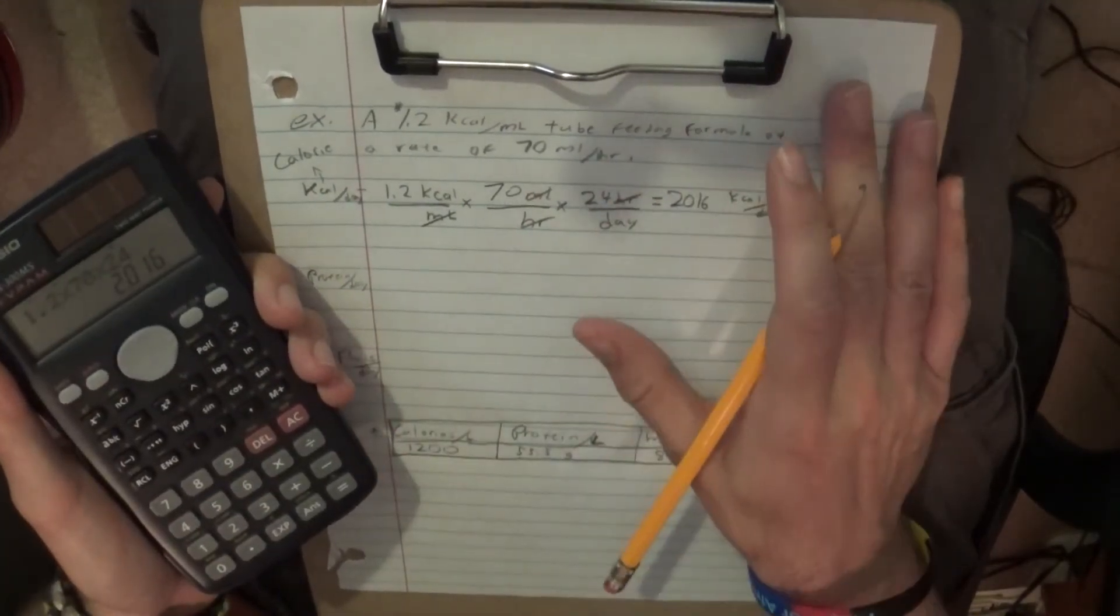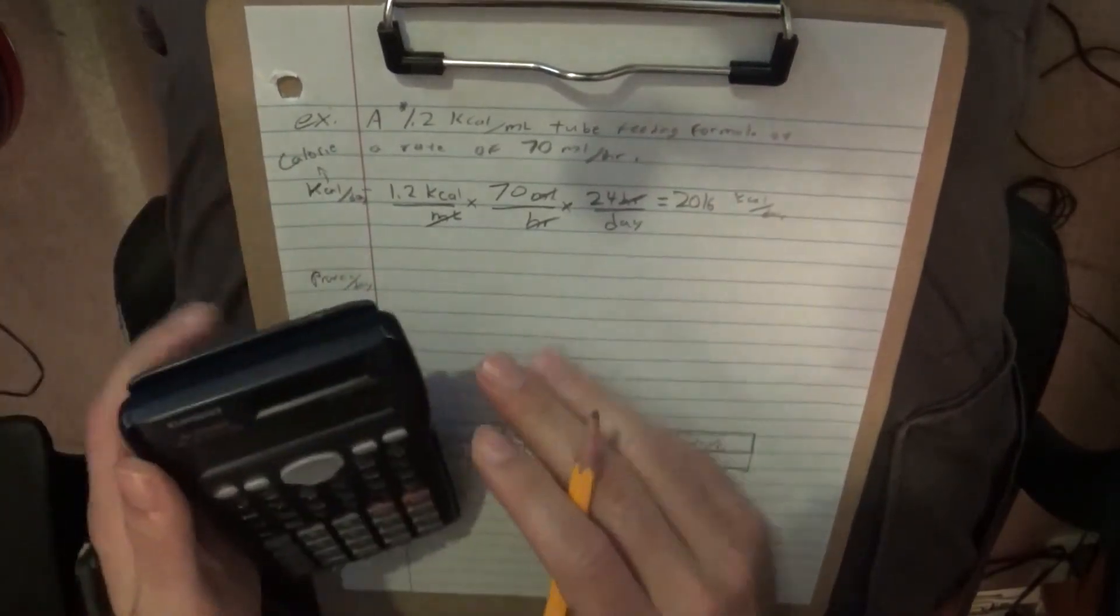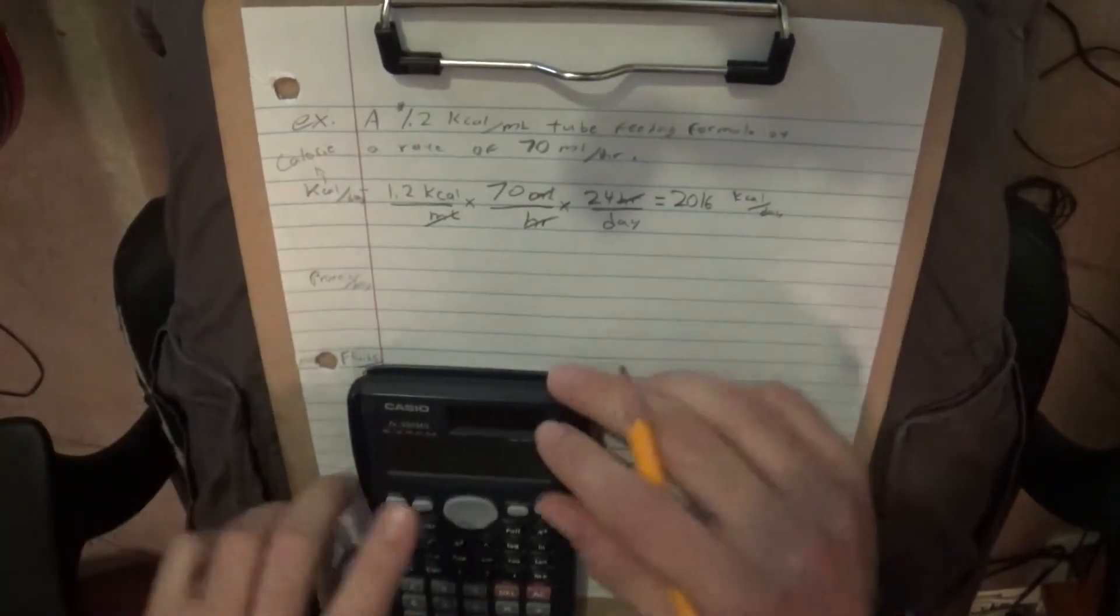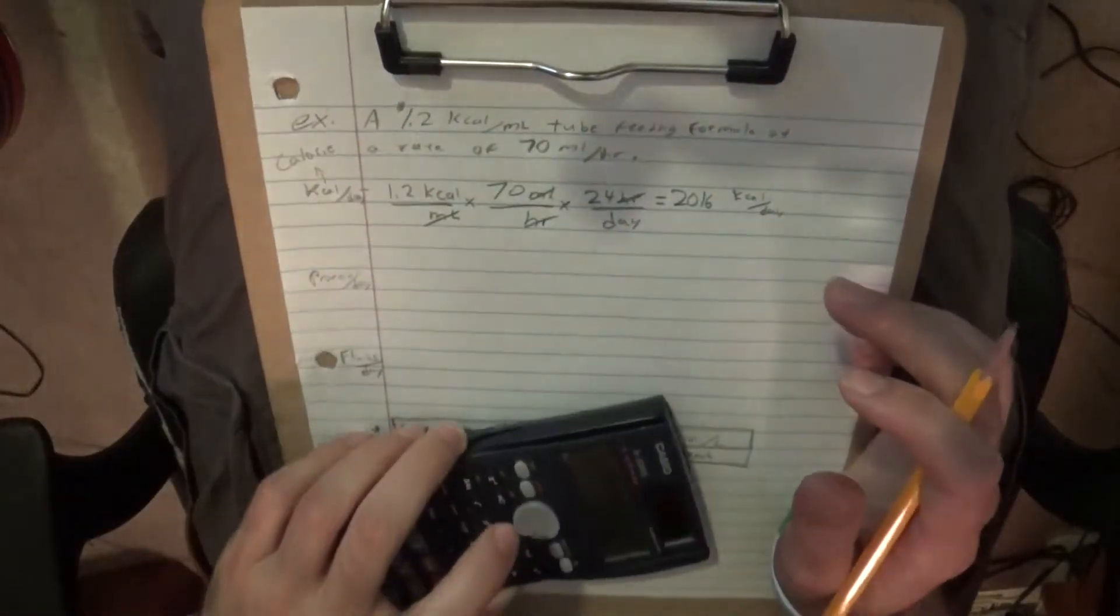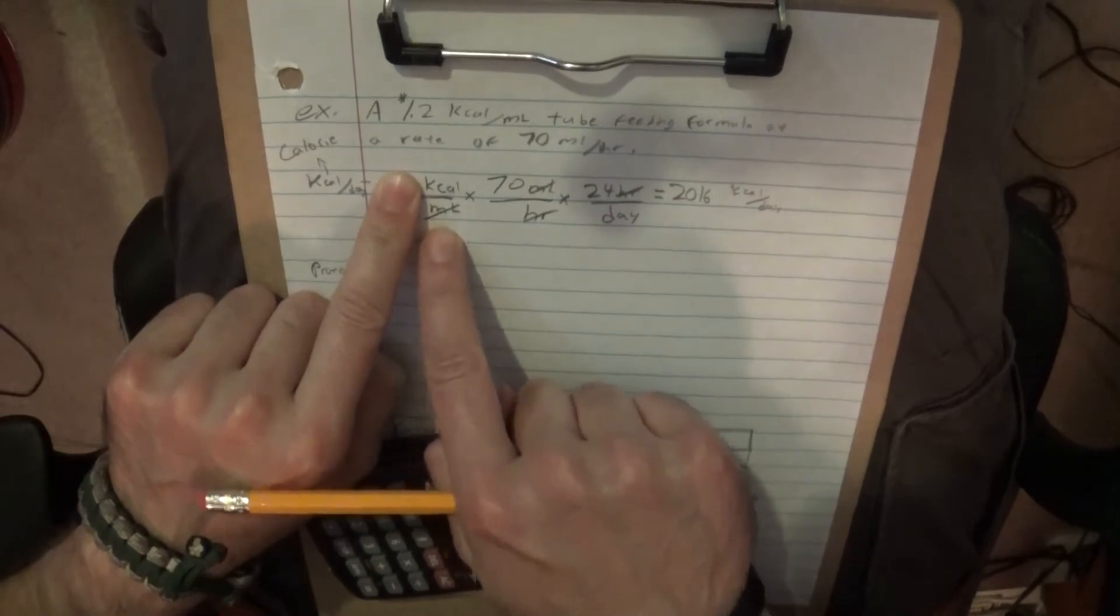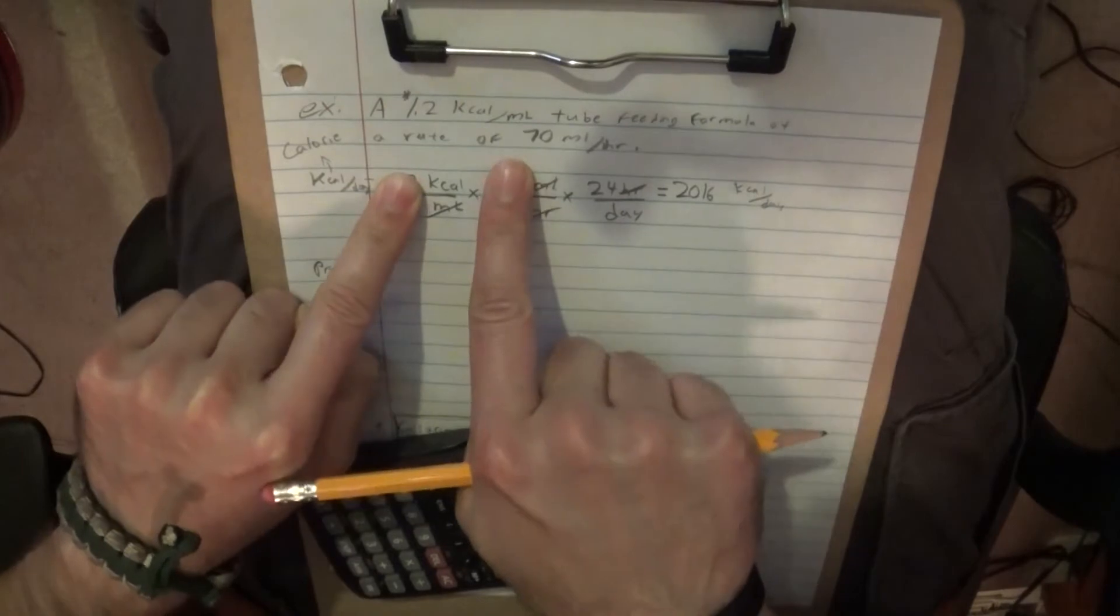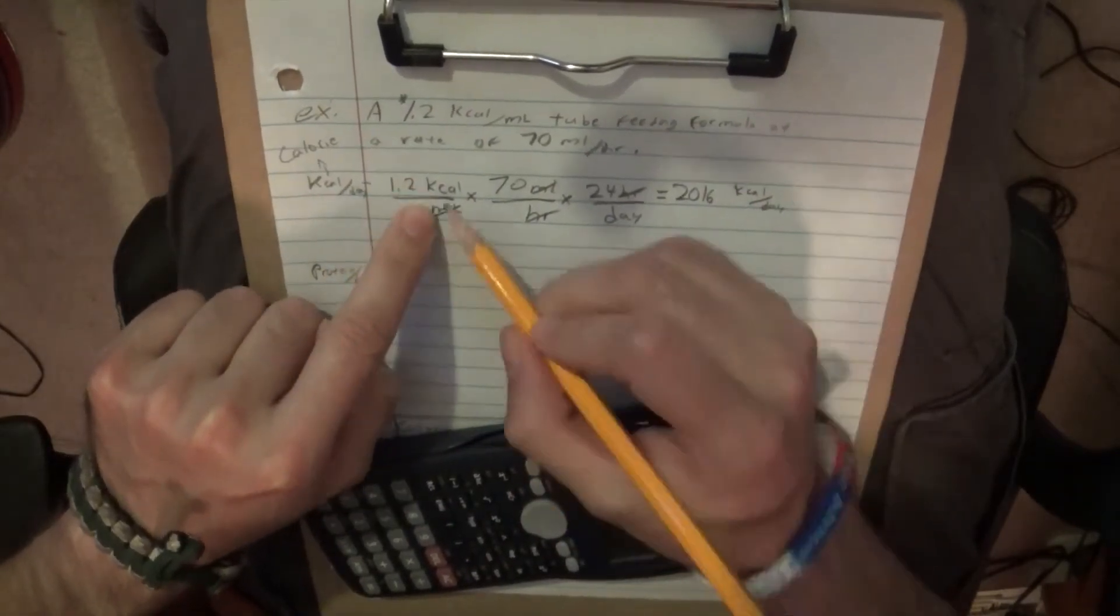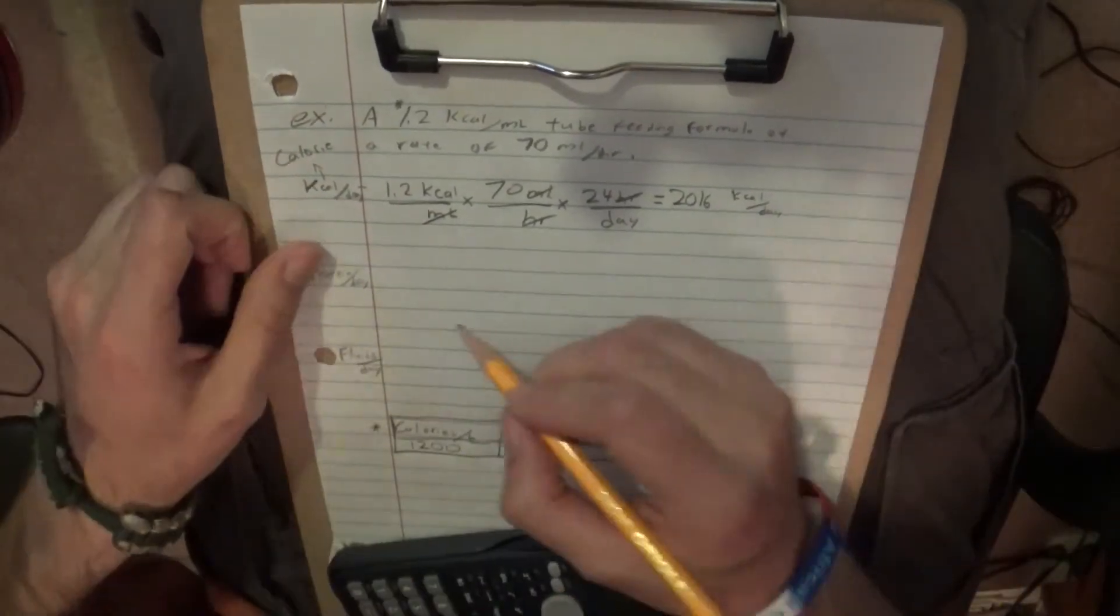Now, if that doesn't make a whole lot of sense, just understand this one thing. You don't need the numbers to solve this math the way I just did this until you get to the point where you are done with balancing the equation and you multiply it on the calculator. All you need to know is kilocalories over milliliters, milliliters over hours, and hours over days. You have those three things to work with, cancel out everything that's not important, and you wind up with kilocalories over days, which is the solution you're looking for.